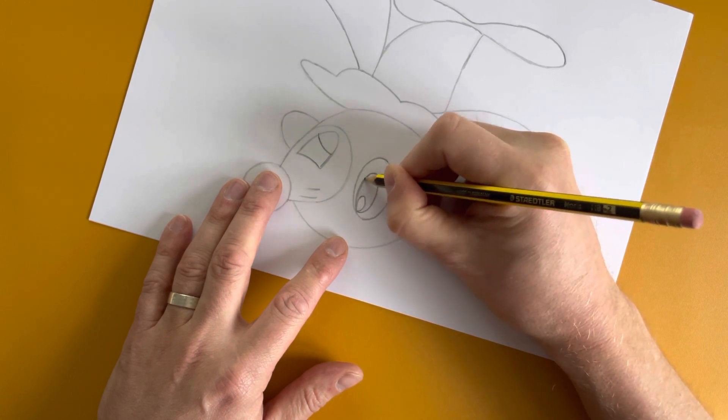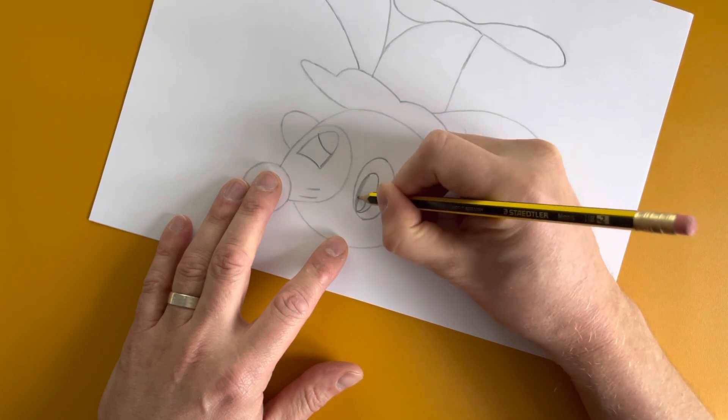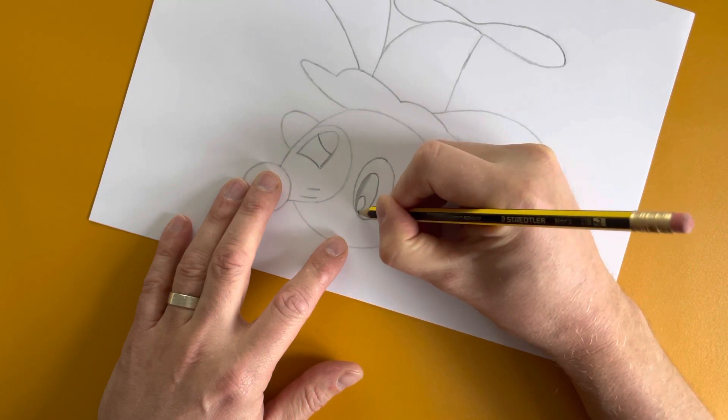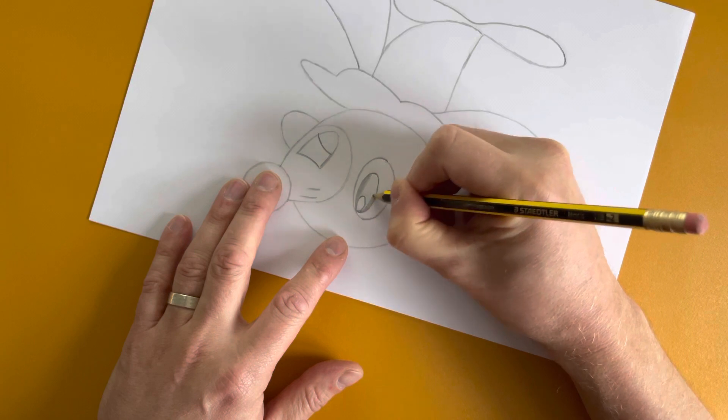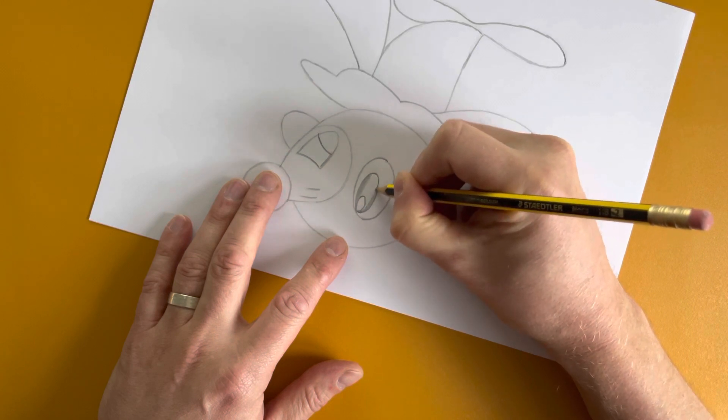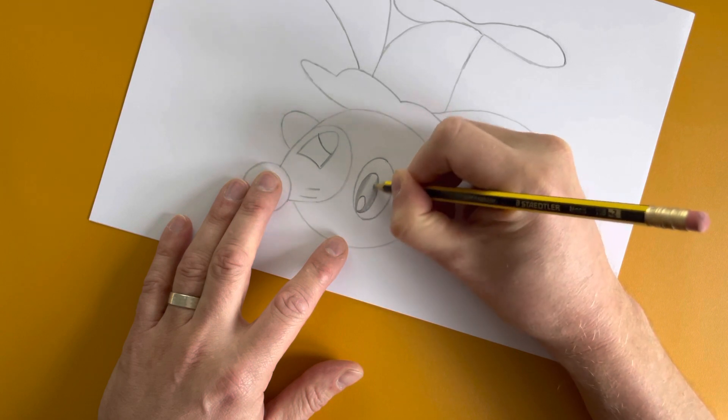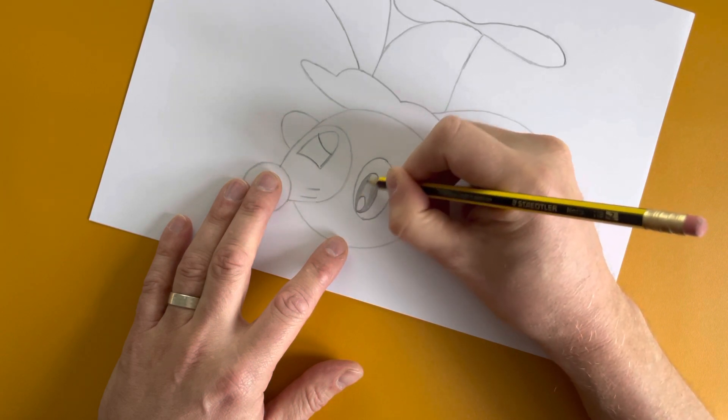And then we're just going to shade in the eye just so we get the dark piece in the center of the bit of the eye. I'm going to do it in the same shape as the eye.